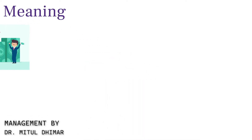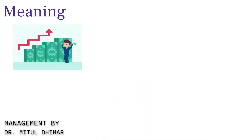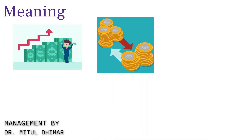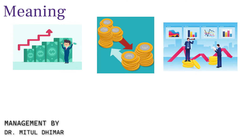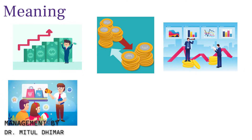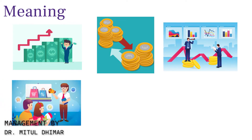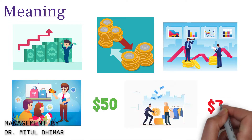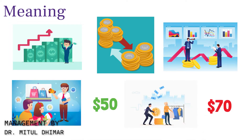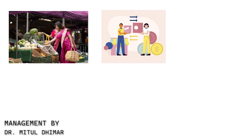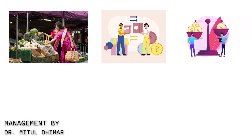Arbitrage is essentially the practice of taking advantage of price differences for the same asset or security in different markets. Let's say you find a product selling for $50 in one market and $70 in another. By purchasing it from the cheaper market and selling it in the more expensive one, you can pocket the price difference as profit.